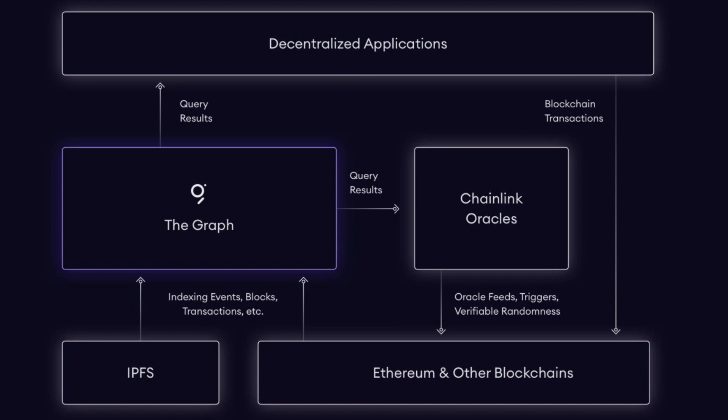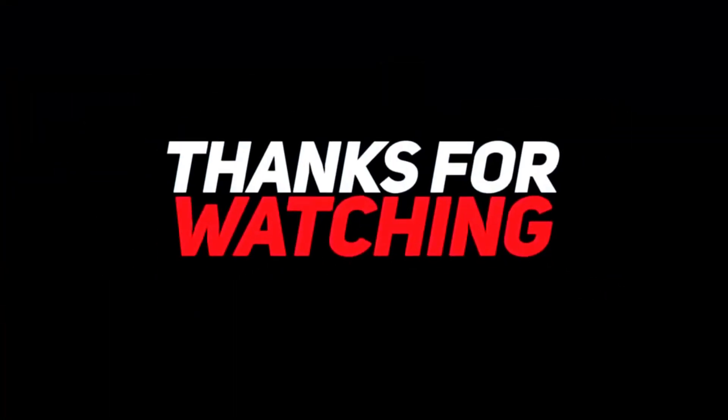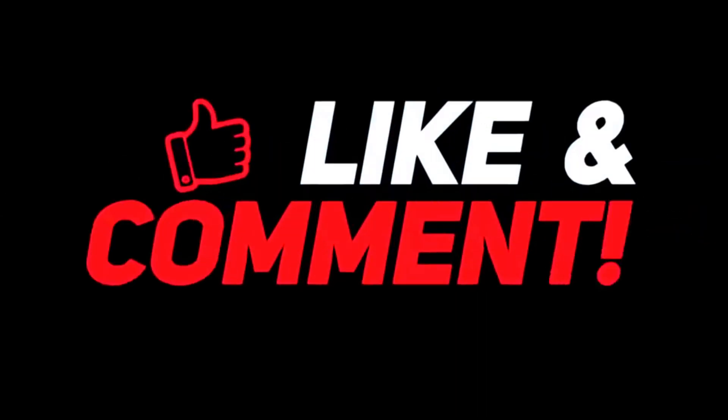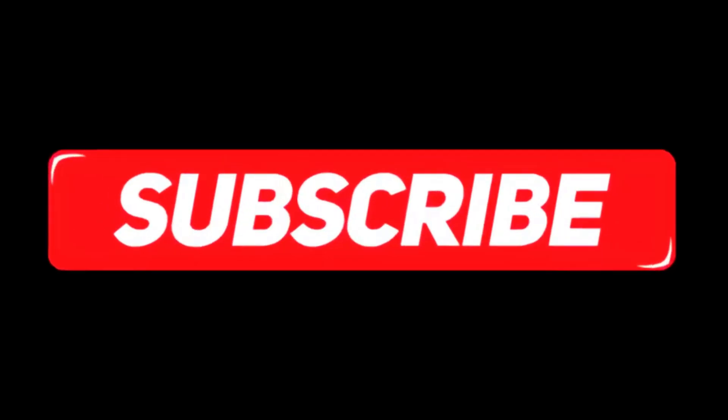So now you know the differences between these projects and how they help each other out. The Graph and Chainlink are not competitors — they are both essential in building the decentralized world. Please subscribe if you have not, hit the notification bell, like the video, and leave a comment to interact with the community here at Investors Vibe. See you another time.